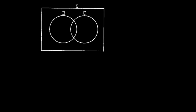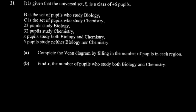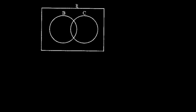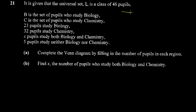You're given this information and then asked to complete the Venn diagram by filling in the number of pupils in each section. I've looked at it and the Venn diagram is like this.